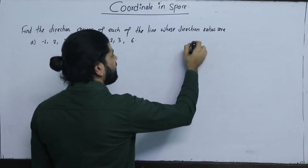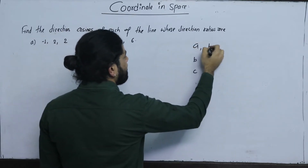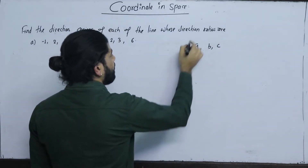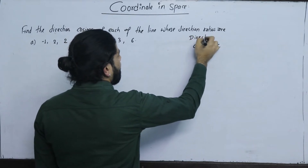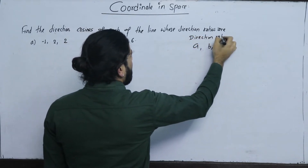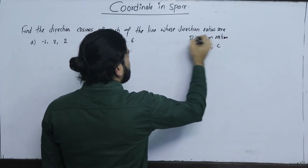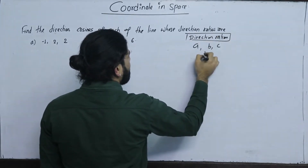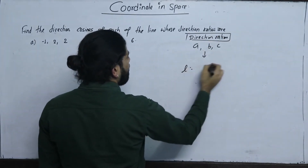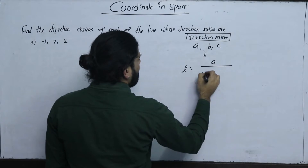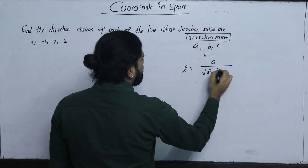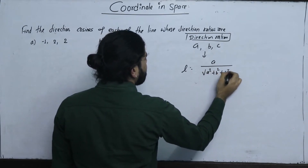I am saying a, b, c is a direction ratio. Now, I am going to show you the direction cosine — specifically a over the square root of a squared plus b squared plus c squared.